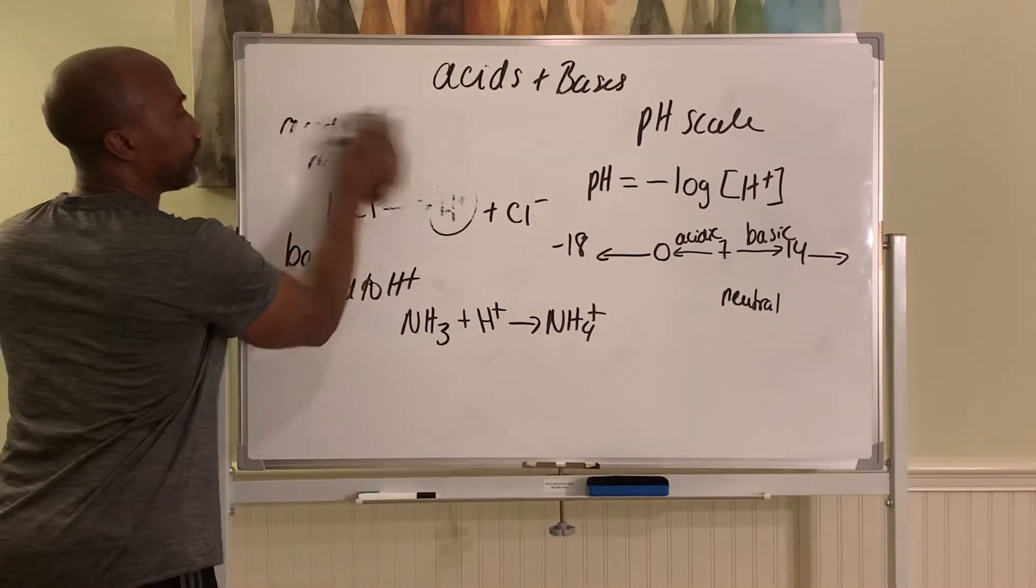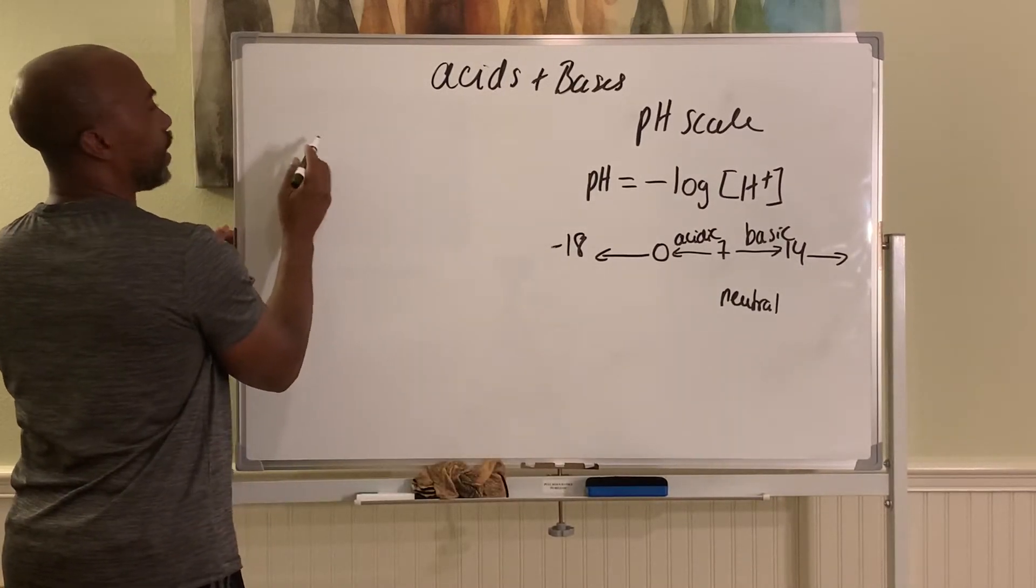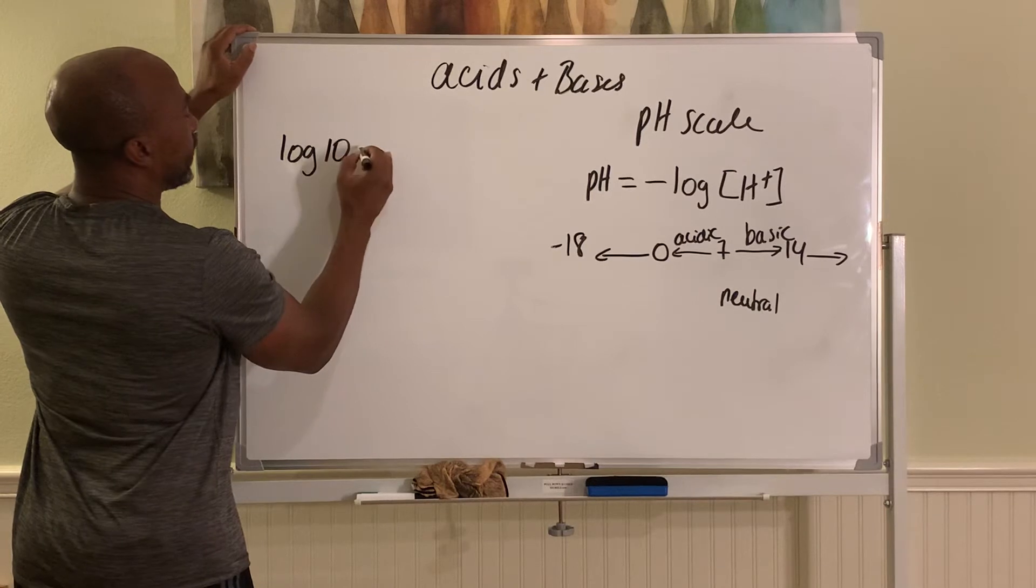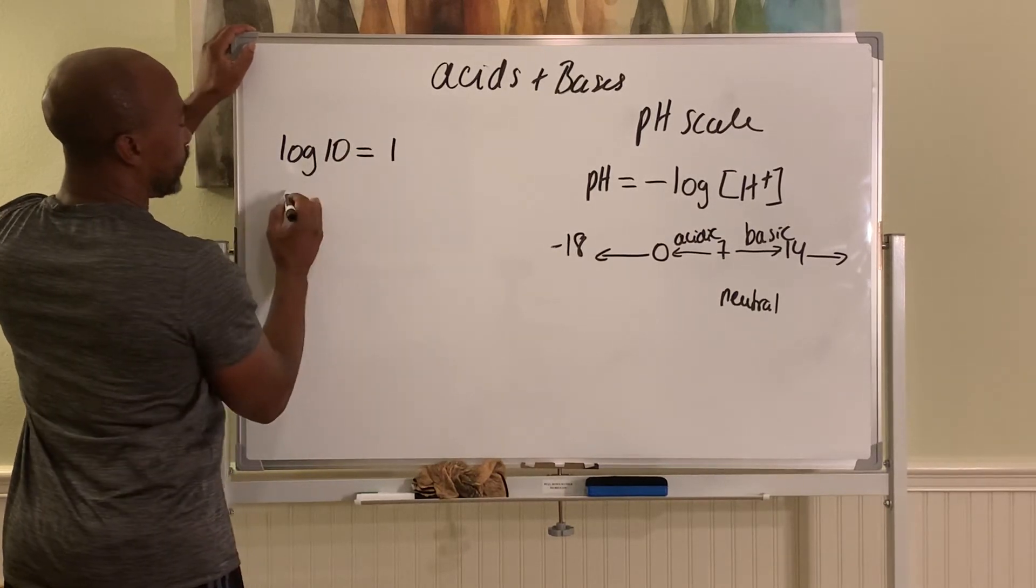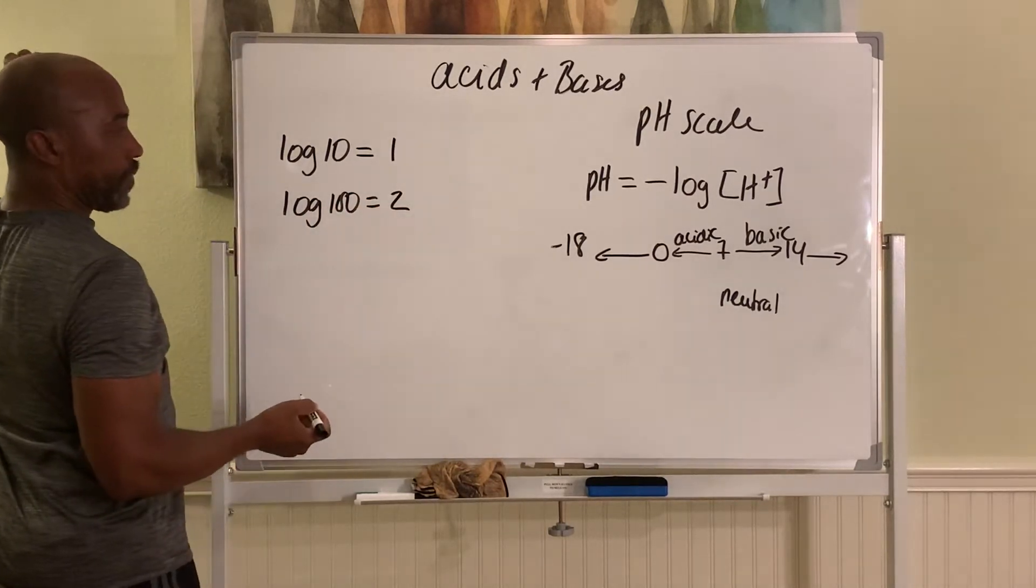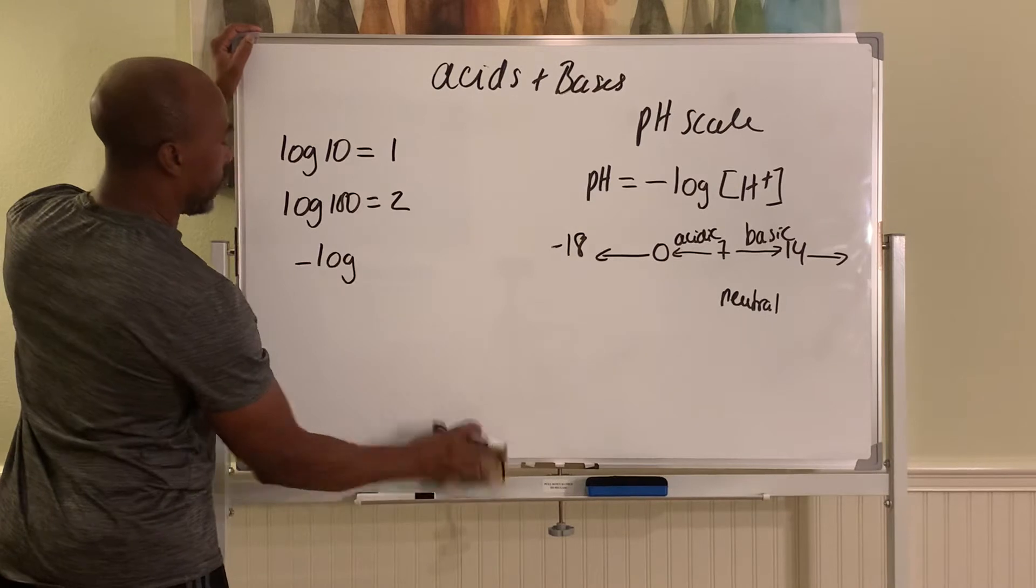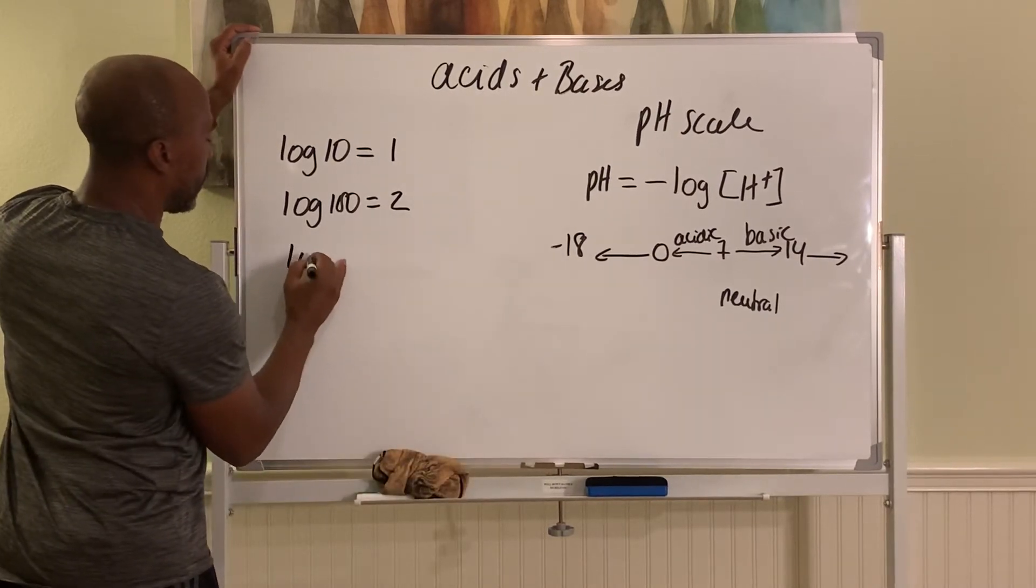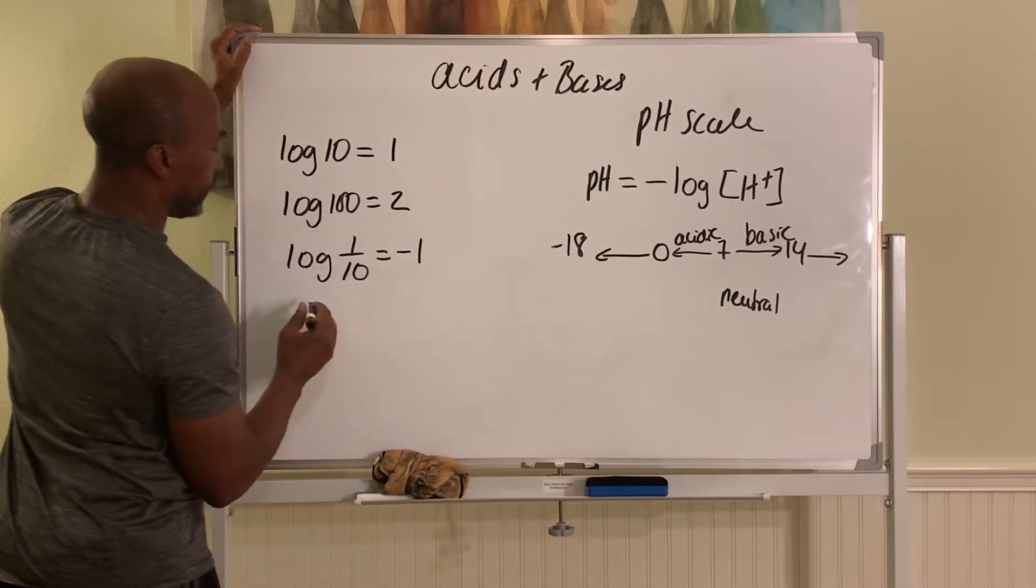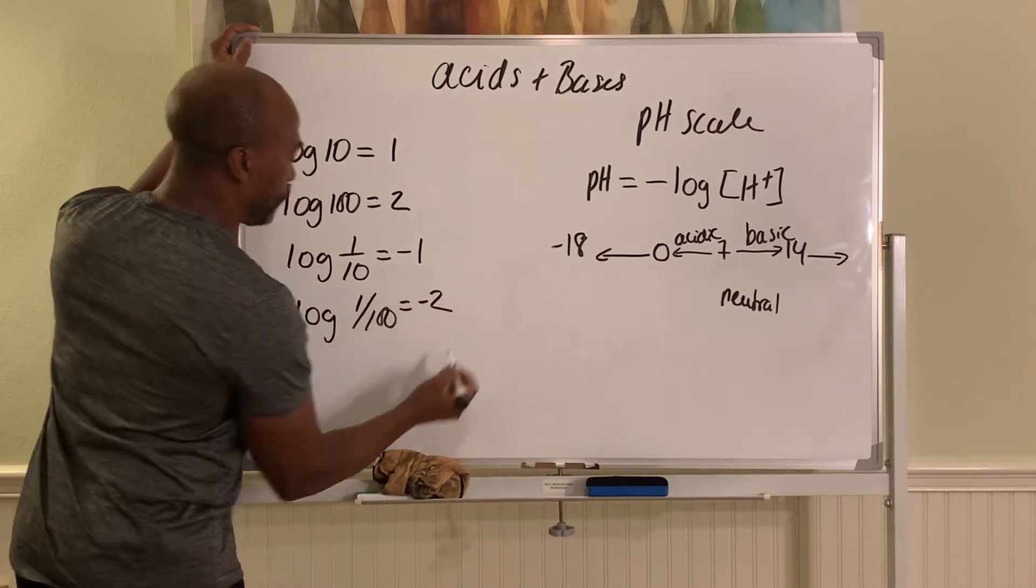Another thing about pH scale. Look at an example here. So for example, if the log of 10 is equal to 1, the log of 100 is equal to 2. And the log of 1 over 10 is equal to negative 1. And the log of 1 over 100 is equal to negative 2.